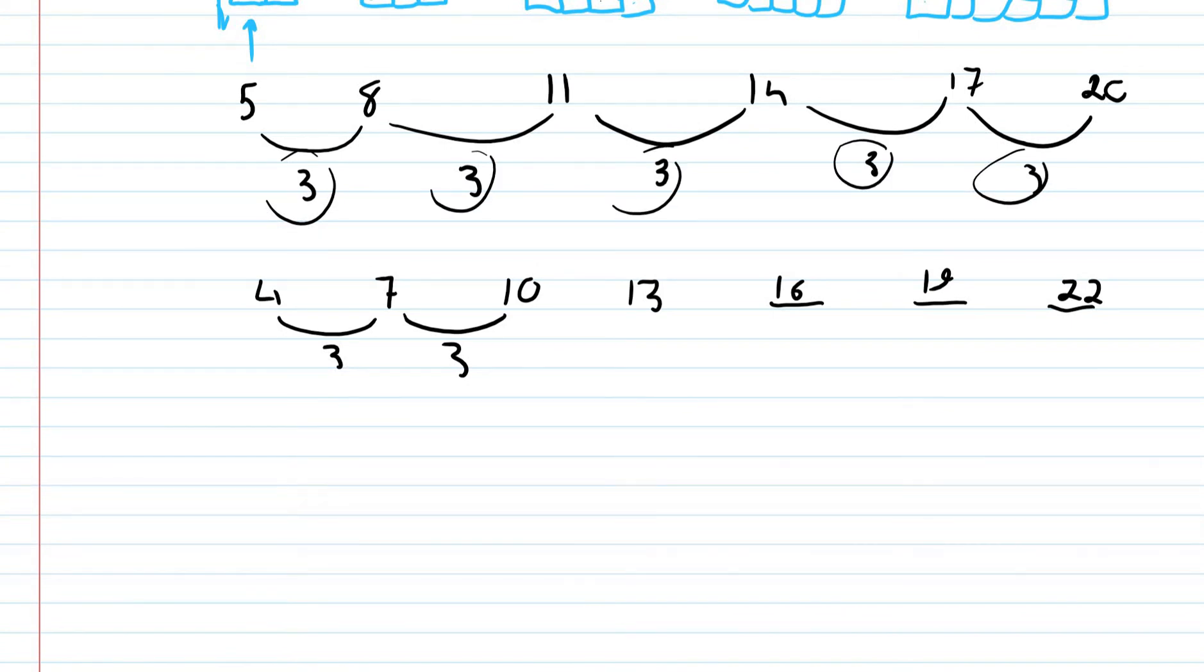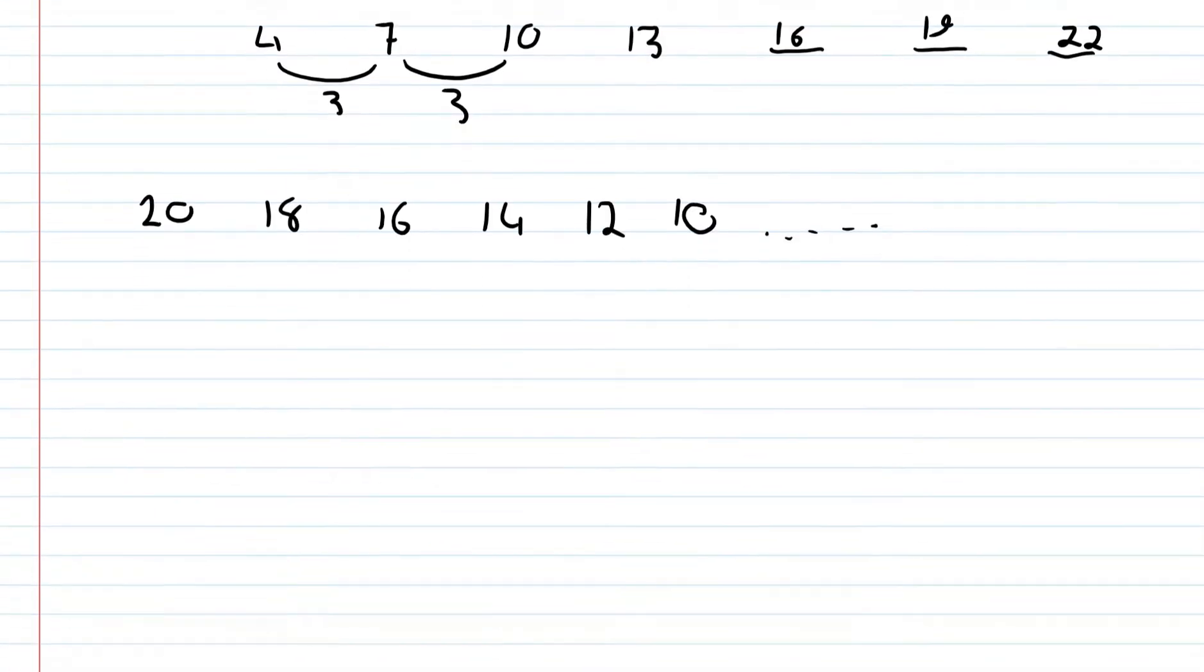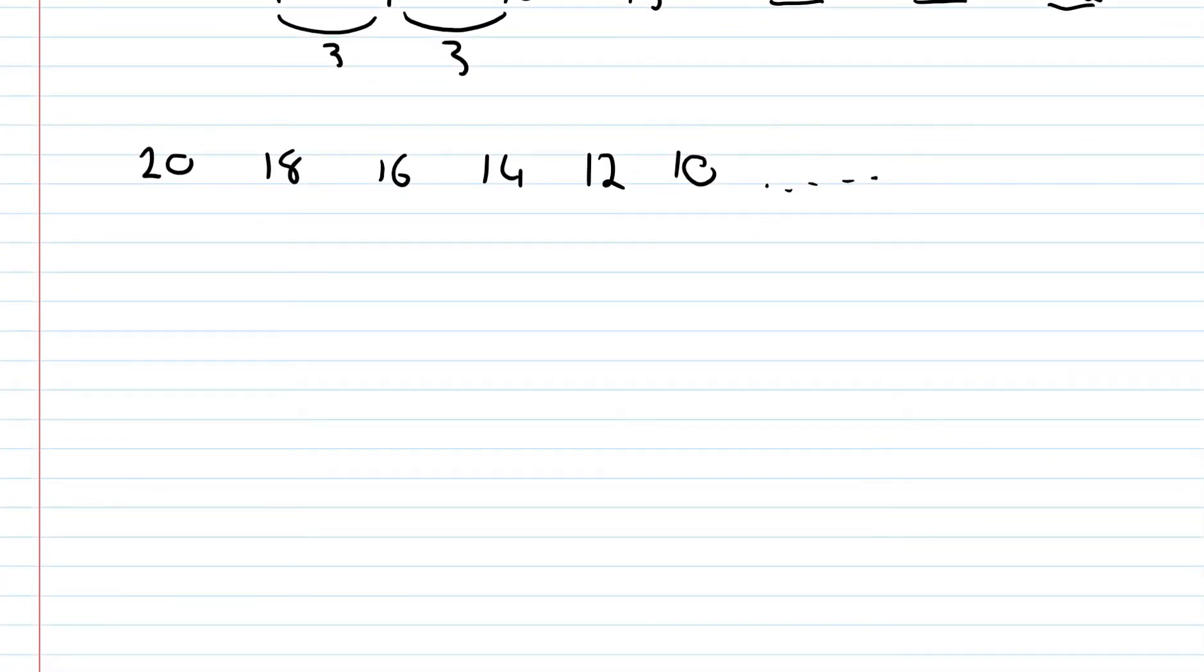It doesn't always have to be like that. We could reduce it by a certain number. So, we could reduce it by 2 every time. So, the next one would be 12 and 10 and so on. So, we might not necessarily reduce by the same number.